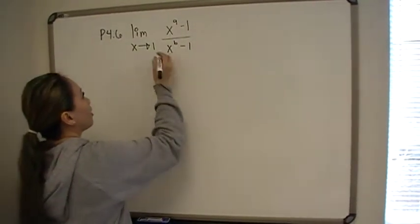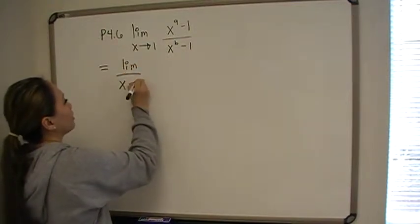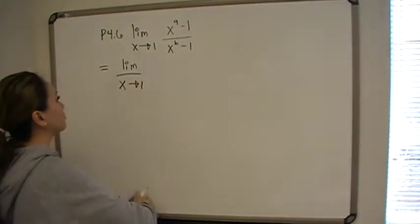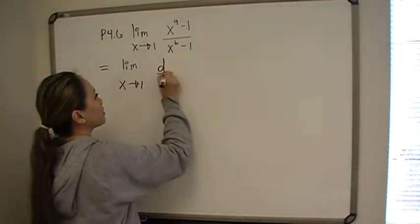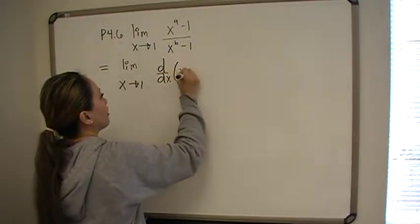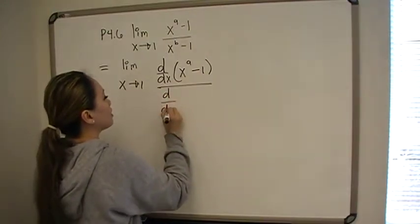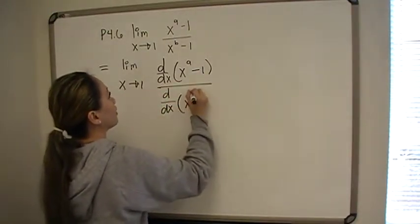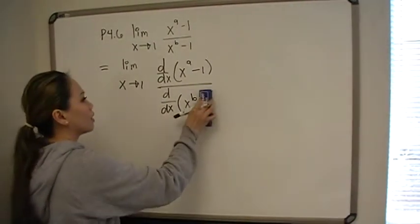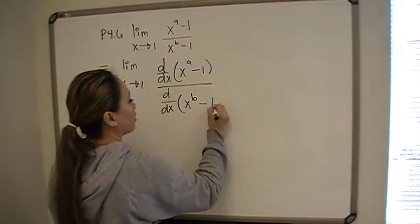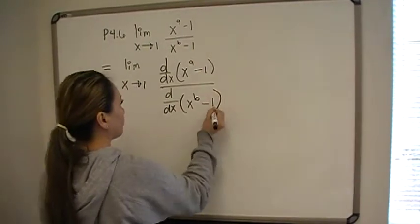We can use L'Hopital's rule. Now that limit is going to equal the limit of the derivative of each. As x approaches 1, we'll take the derivative of the top, d dx of x raised to the a minus 1, over d dx of x to the b minus 1.